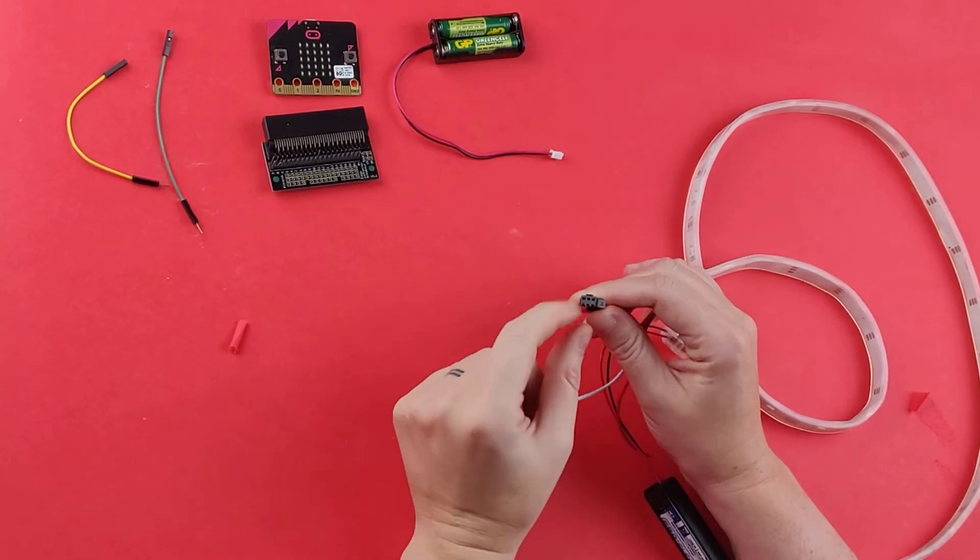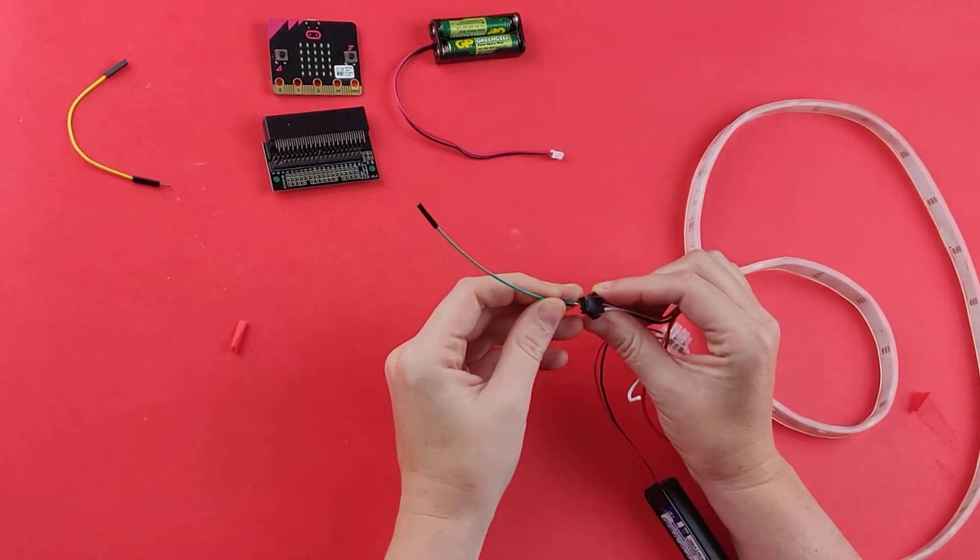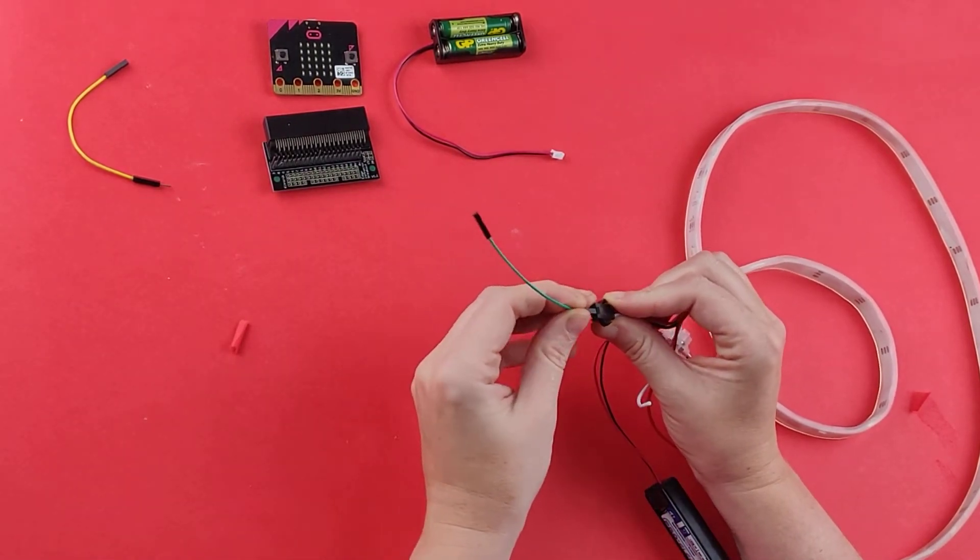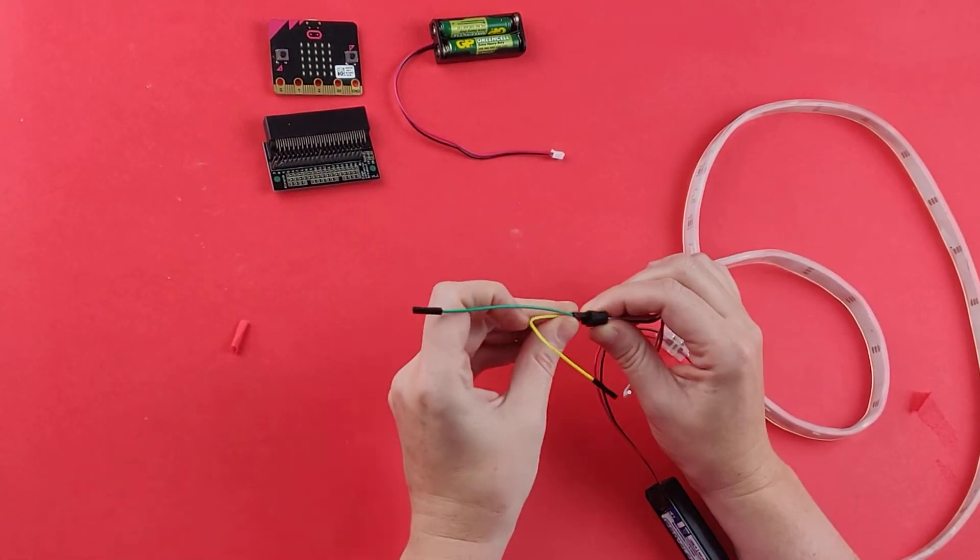I'm going to use a male to female jumper wire and connect the data wire and the ground wire. So on my strip, data is green and ground is white.